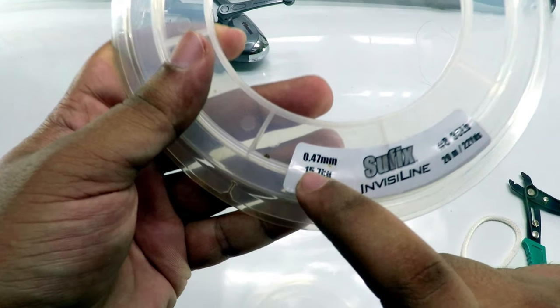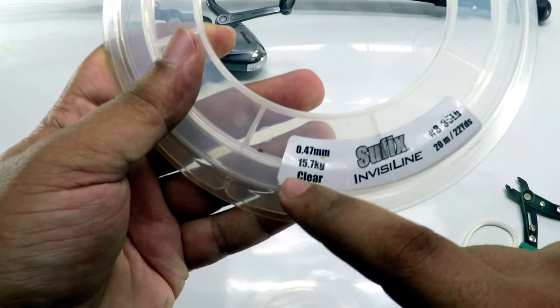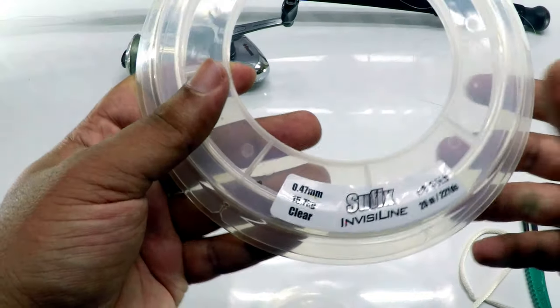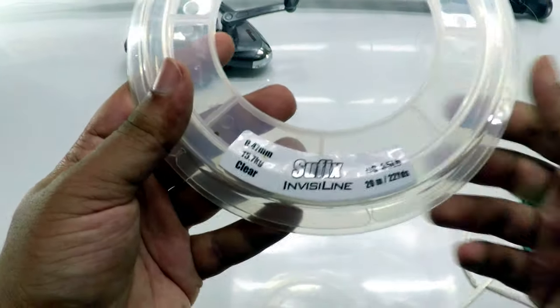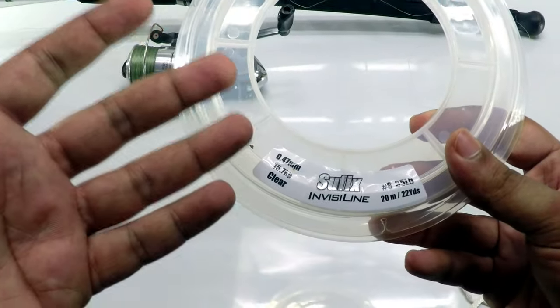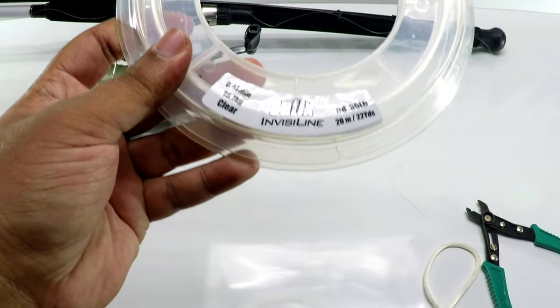The fluorocarbon I'm using is from Suffix—this is Suffix Invisi Line. It's 0.47mm, which is pretty thin, and has a 15.7kg breaking strength. These invisi lines are a bit expensive for 20 meters.